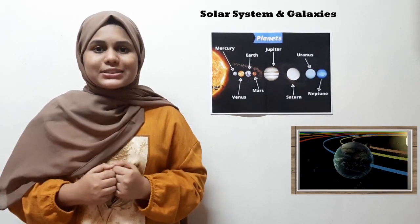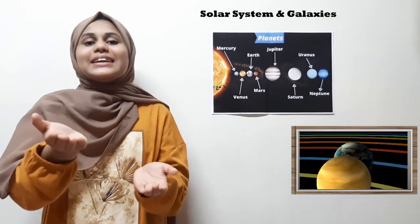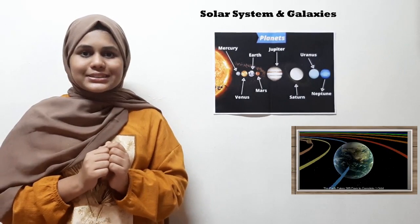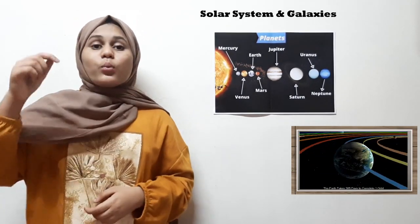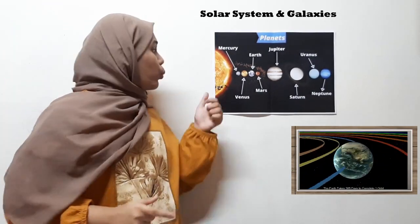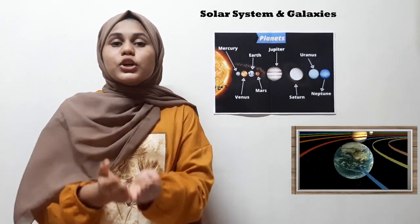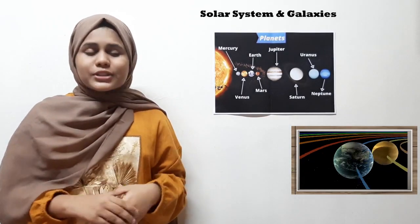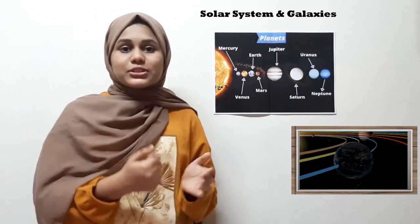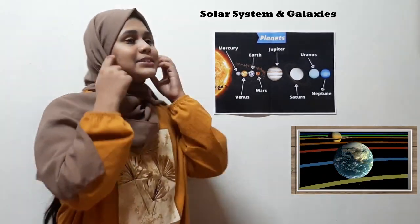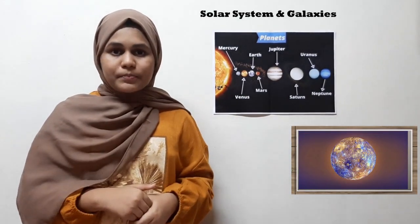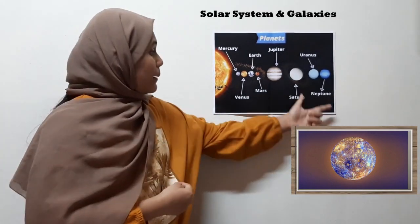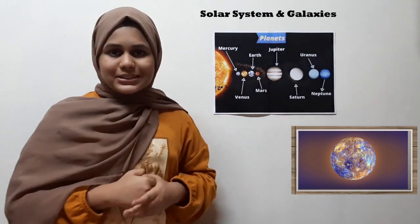We have eight planets in the solar system. Let's name them: we have Mercury, Venus, Earth, Mars, Jupiter, Saturn, Uranus, and Neptune. Those are the eight planets of the solar system, and they are listed according to their distance from the Sun — Mercury being the nearest and Neptune the furthest.